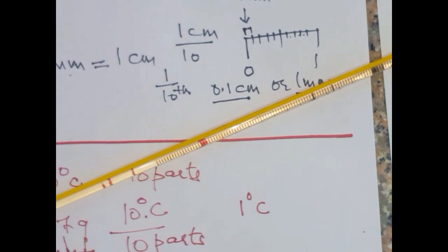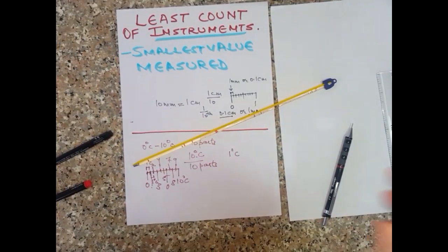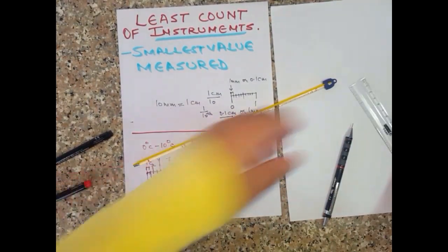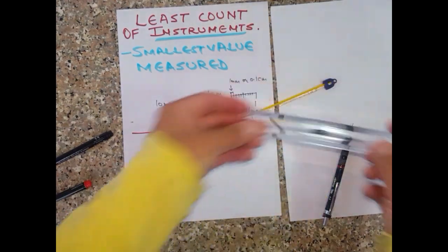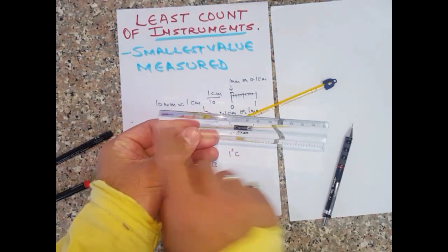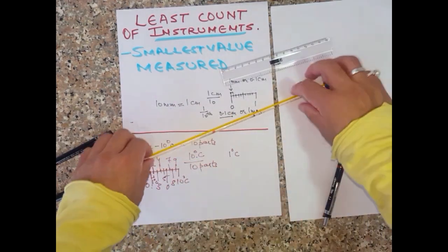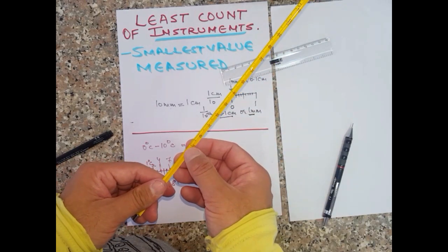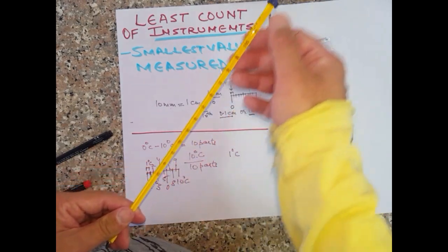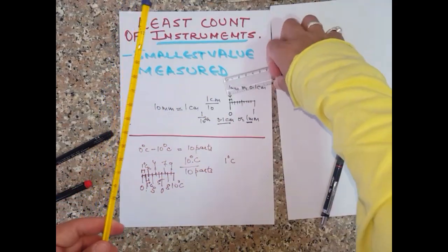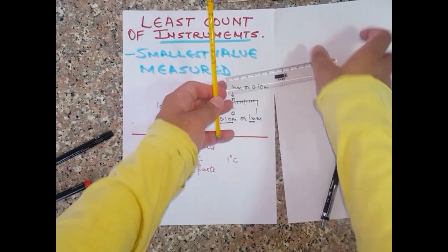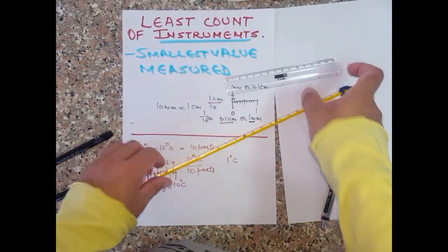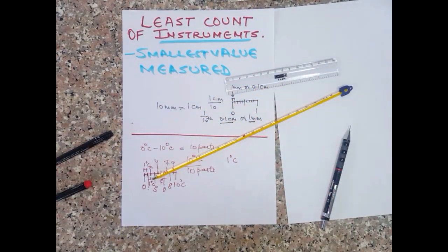I hope you've understood what is meant by the least count of an instrument. Every instrument has a least count. This scale had a least count of 0.1 centimeter, and this thermometer has a least count of 1 degree Celsius. Remember, the scale measures length whereas the thermometer measures temperature. I will see you in the next video. Thank you.